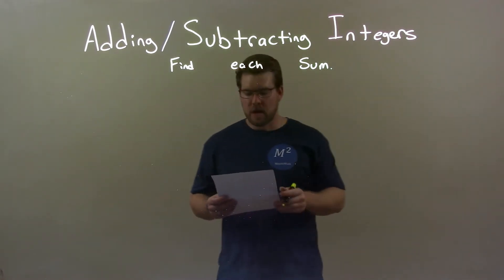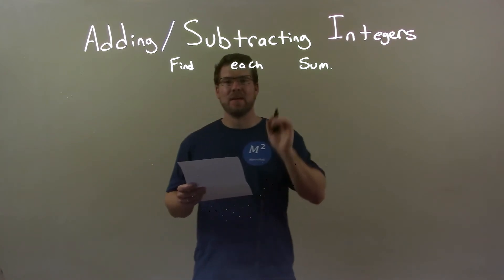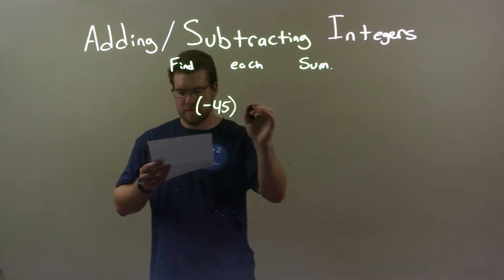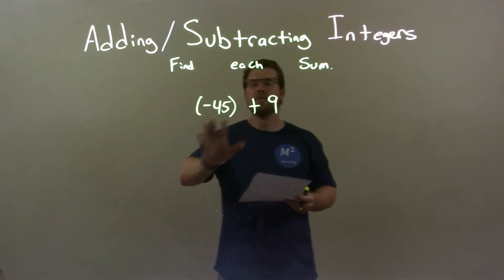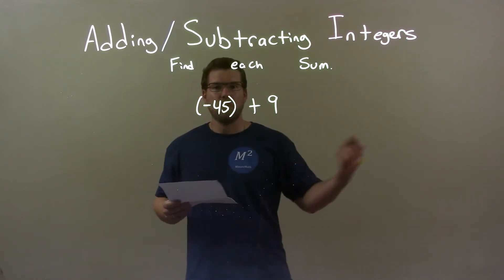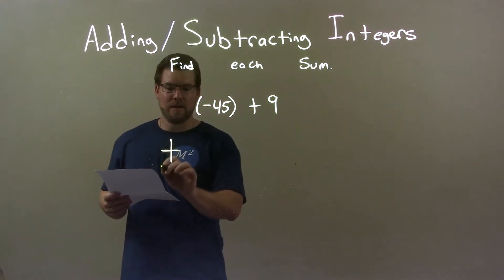We're going to find each sum. So, if I was given these two integers, negative 45 plus 9. So we have negative 45 plus 9 right there. We start with negative 45, so let's put that here, negative 45.